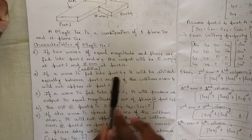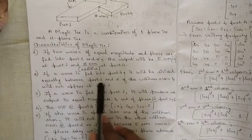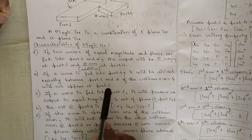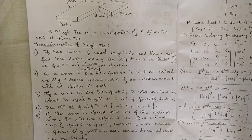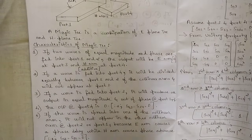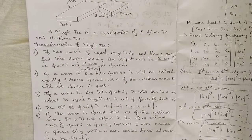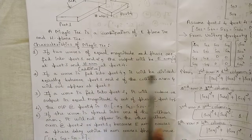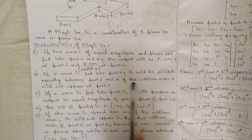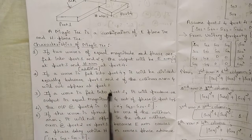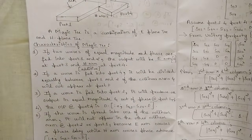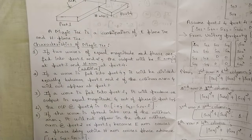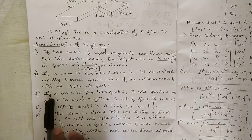Characteristic two: if a wave is fed into port 4, it will be divided equally between port 1 and 2 of the collinear arms and will not appear at port 3. Since it is a 4-port network, it is not necessary that all 4 ports activate simultaneously — only 3 ports get activated at a time.